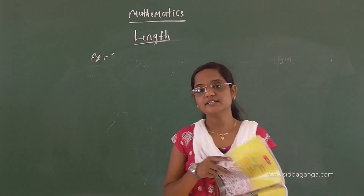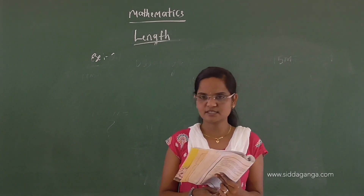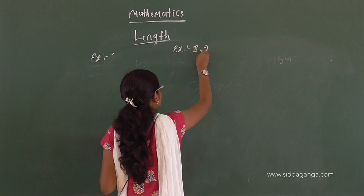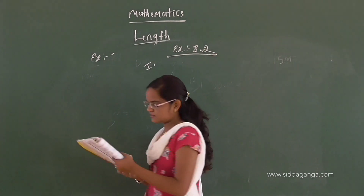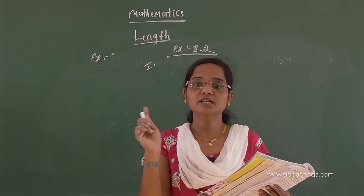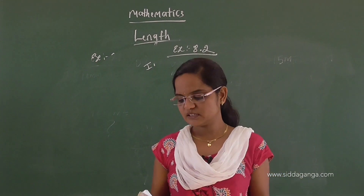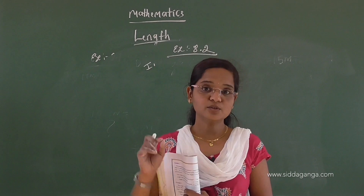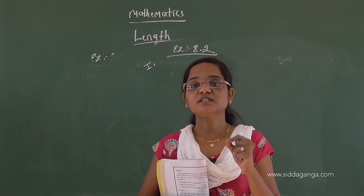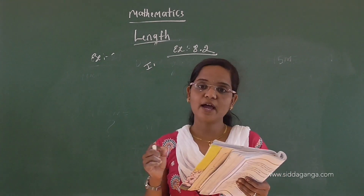Let's take the next exercise — Exercise 8.2. Answer orally. The length of one wire is 3 meters. What is the total length of 5 such wires? We will answer: 3 meters, multiplied by 5, gives 3 fives are 15. So the total length of 5 wires is 15 meters.